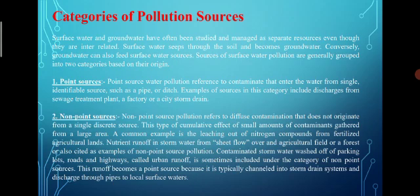Contaminated storm water washed off of parking lots, roads and highways is called urban runoff. This runoff is sometimes included under the category of nonpoint sources, but it can also become a point source because it is typically channeled into storm drain systems and discharged through pipes to local surface waters.